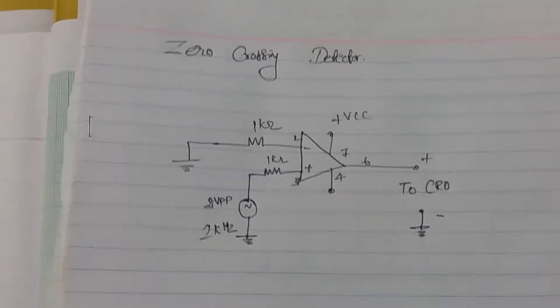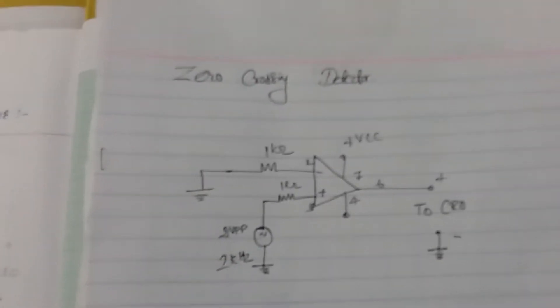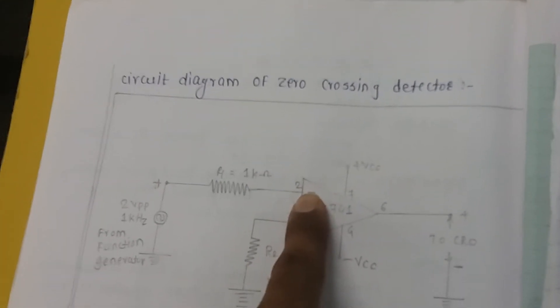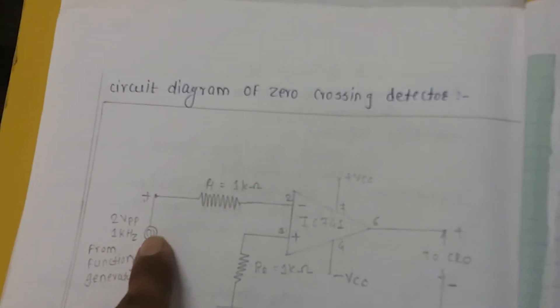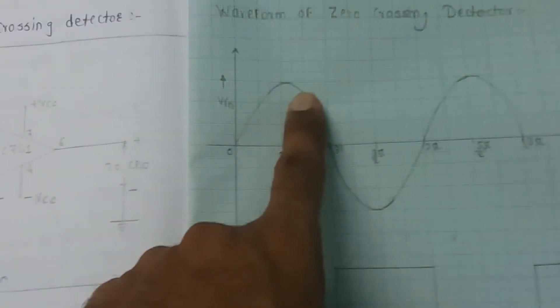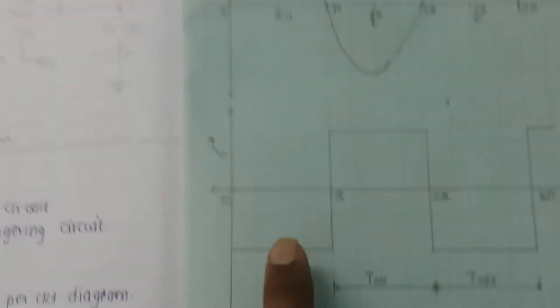In this video, you are going to learn about that. I have changed the input to sinusoidal. Here is a function generator input. Previously I connected it to the minus terminal — minus means inverting terminal. Since the sinusoidal is connected to the minus terminal, the output is just an inverted output.